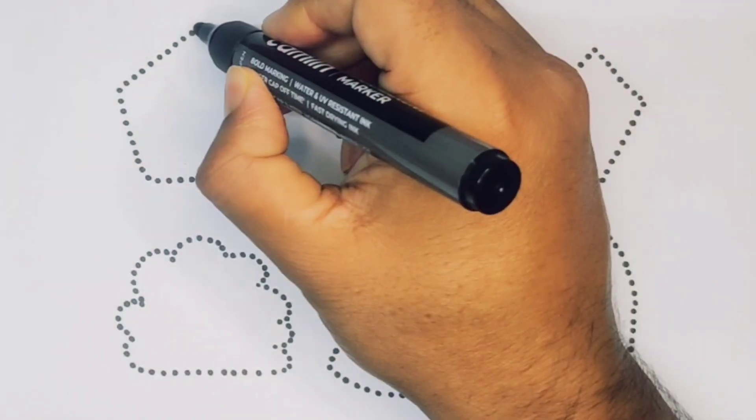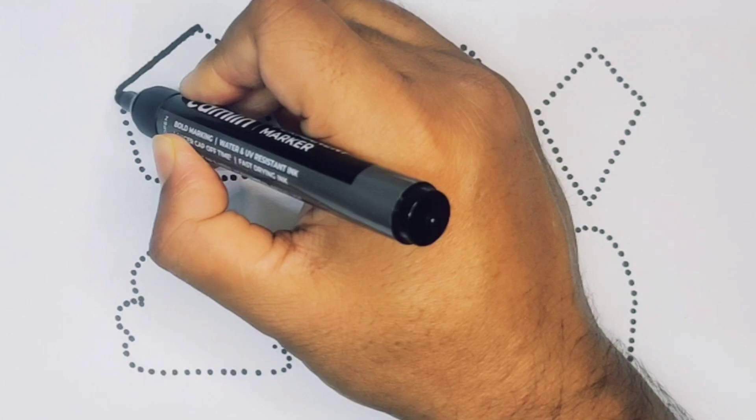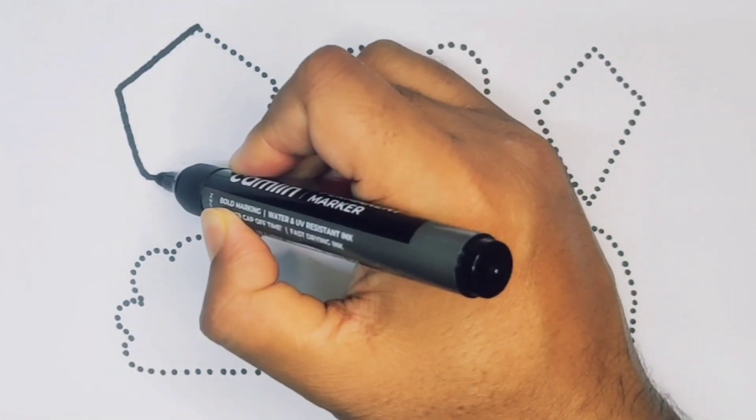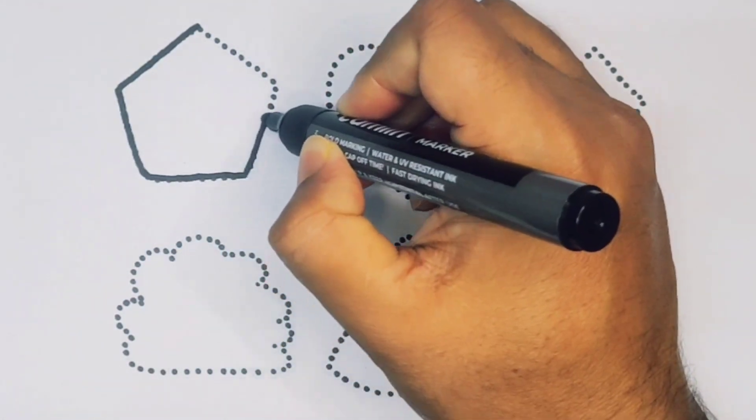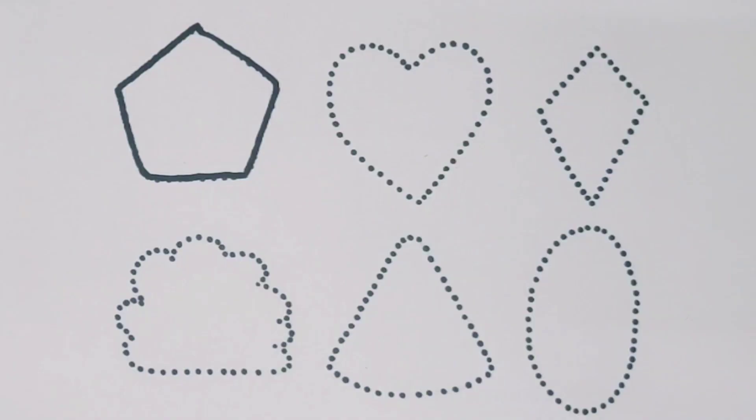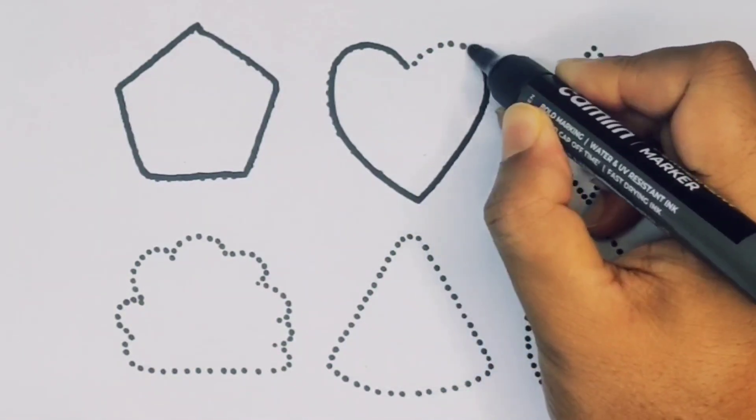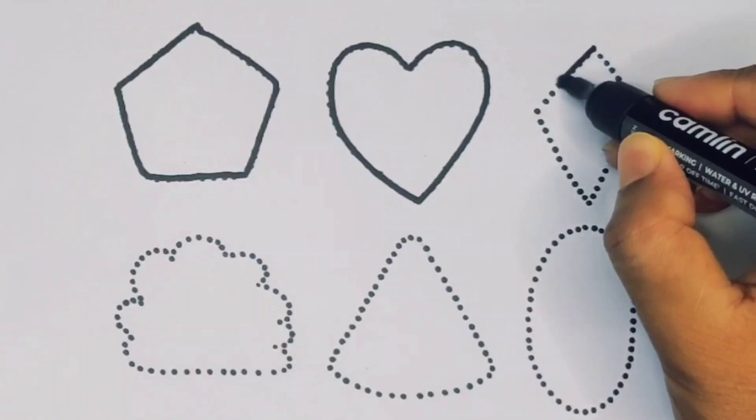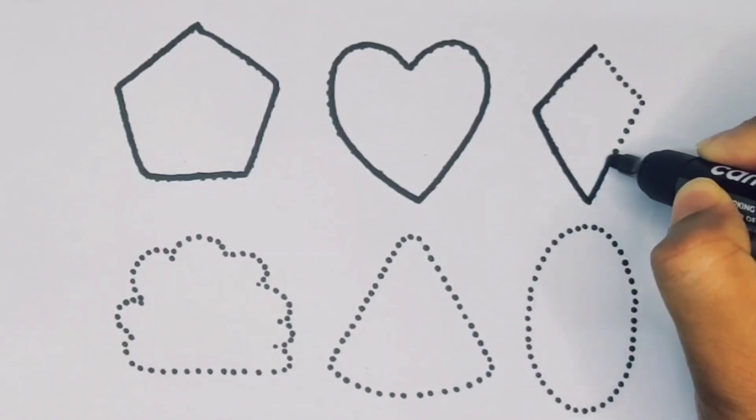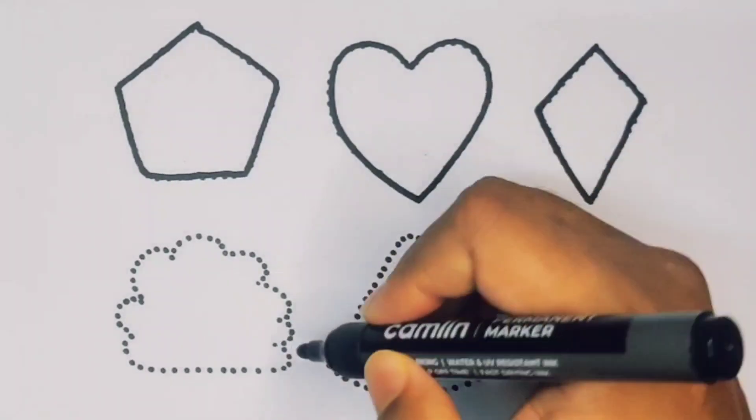First we are going to draw the shapes. Pentagon, heart, kite, cloud.